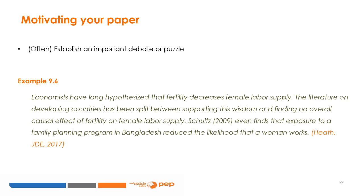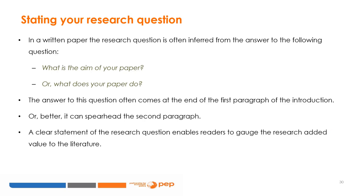Of course, not all research papers are motivated primarily by a specific socio-economic problem. Example 9.6 tells us that one can also motivate a paper by establishing an important debate or puzzle in the literature. This is precisely what Rachel Heath does in her 2017 paper published in the Journal of Development Economics. The debate she contributes to centres around the relationship between motherhood and labour force participation among women. Her contribution is to explore the role played by the social context of women's labour force participation. In development economics, which is usually about interventions aimed at eradicating problems, it is important to start with the motivation and then move to the research question.